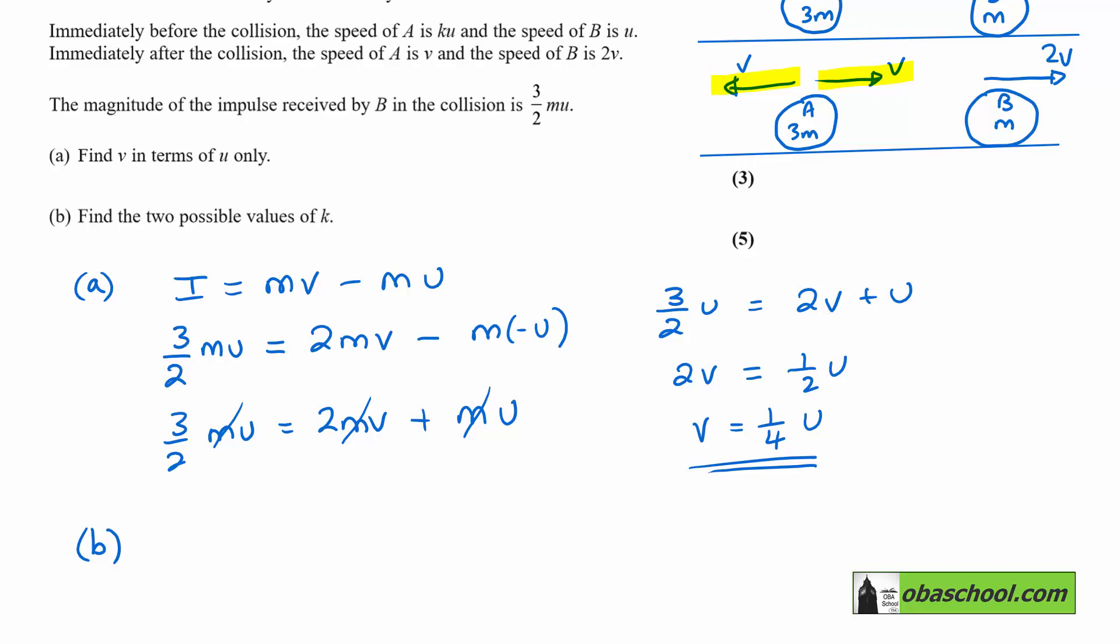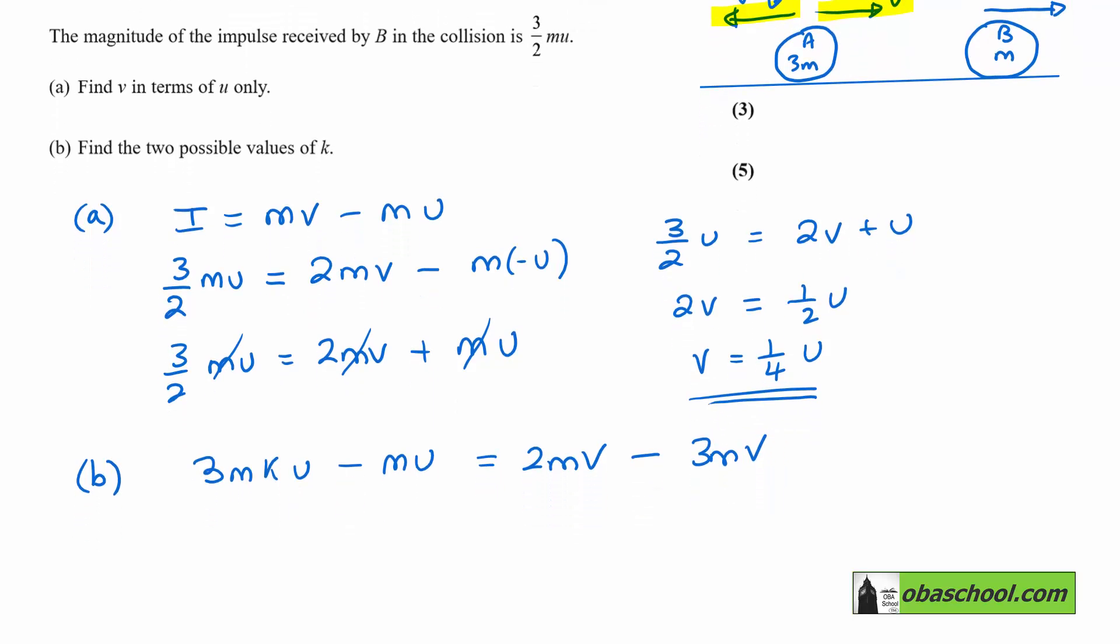If we take the situation where after the collision we're moving to the left, momentum before is 3mKU take away mU. Momentum after is going to be 2mV take away 3mV. Remember, we're taking the right as the positive direction.